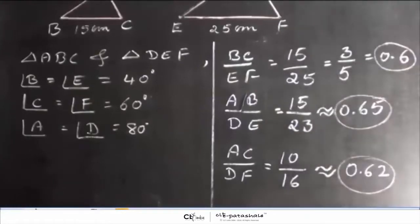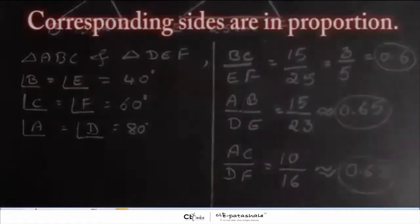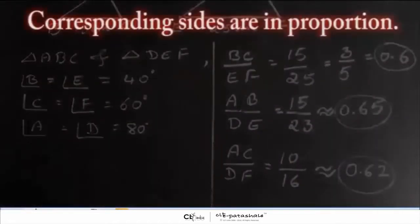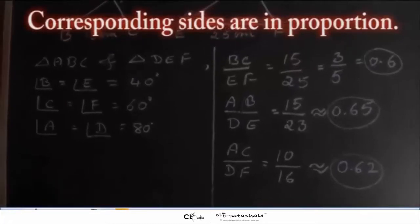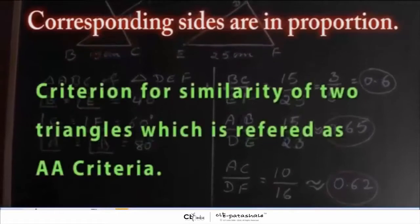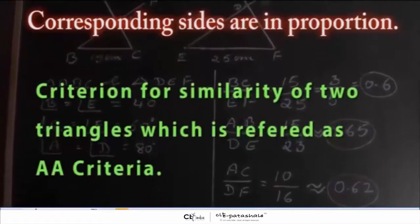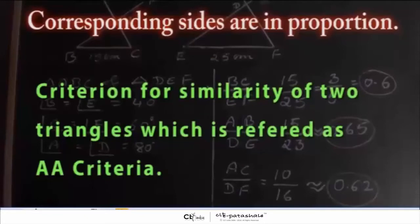So, what can we conclude from this? This activity leads us to the criteria for similarity of two triangles which is referred as AA criteria.